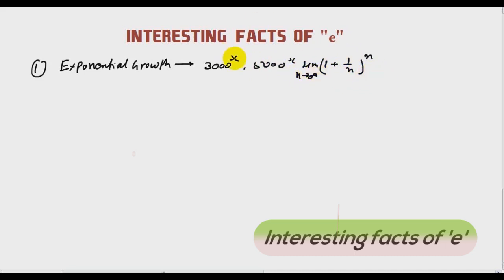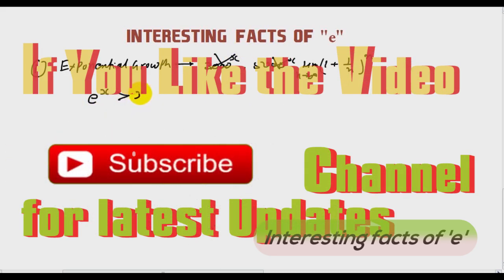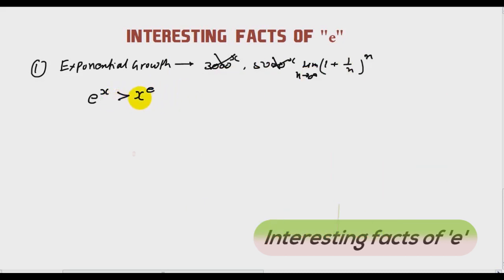We don't want this, we don't want that. The reason is e raised to power x is always greater than x raised to power e. This is only true for e. No other number can have the power which e has. e raised to power x is greater than x raised to power e.